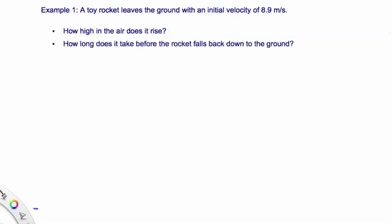The first thing we always do is write down what we know. When you first look at this, it might look like you're not given almost any information at all, but you're actually given quite a lot of implied information. The initial velocity equals 8.9 meters per second. Because we're doing velocity, which has a direction, I'm going to make a decision about which way is positive and which way is negative. I'm going to say that up is positive — it really doesn't matter what you pick as long as you're consistent. So my initial velocity is positive 8.9 meters per second.